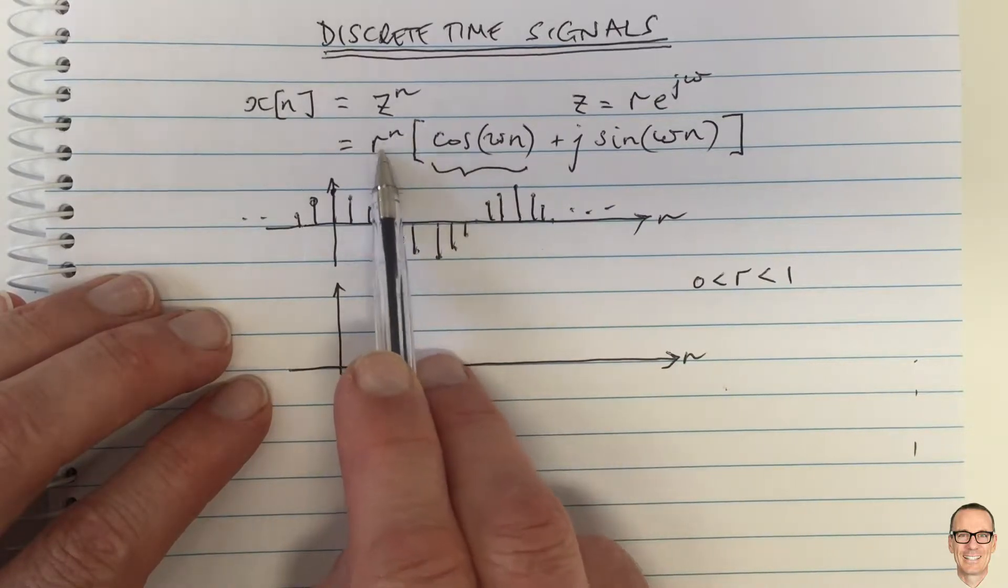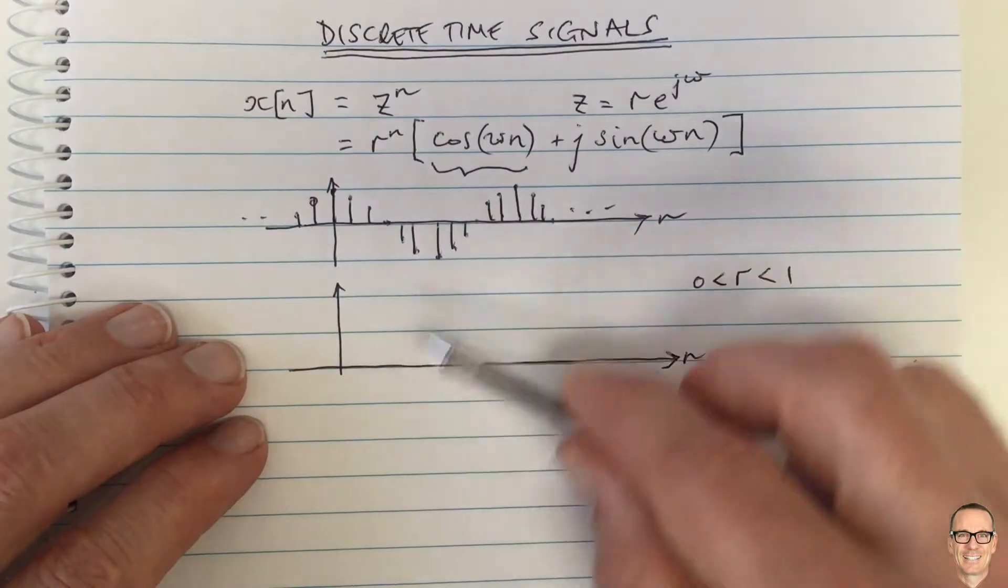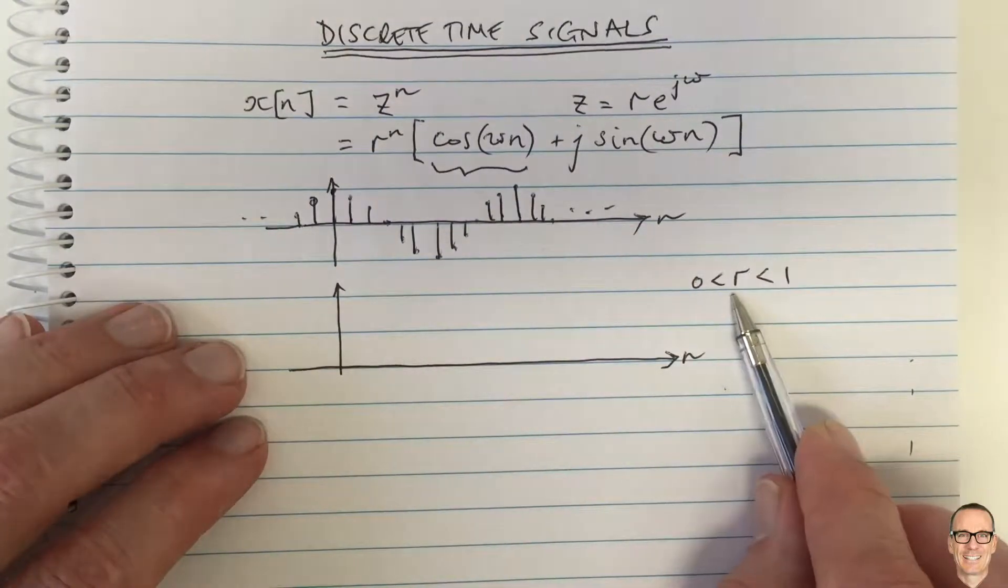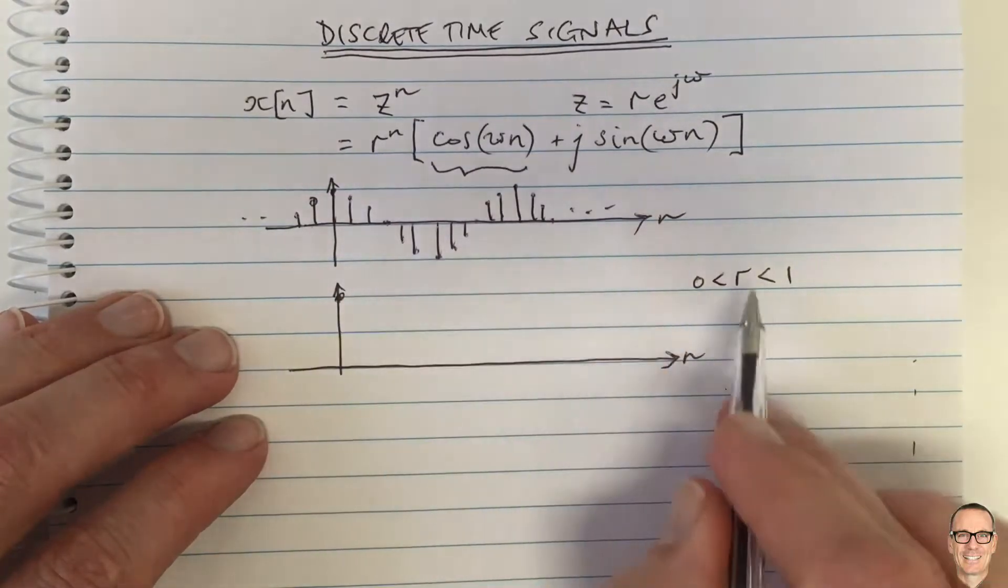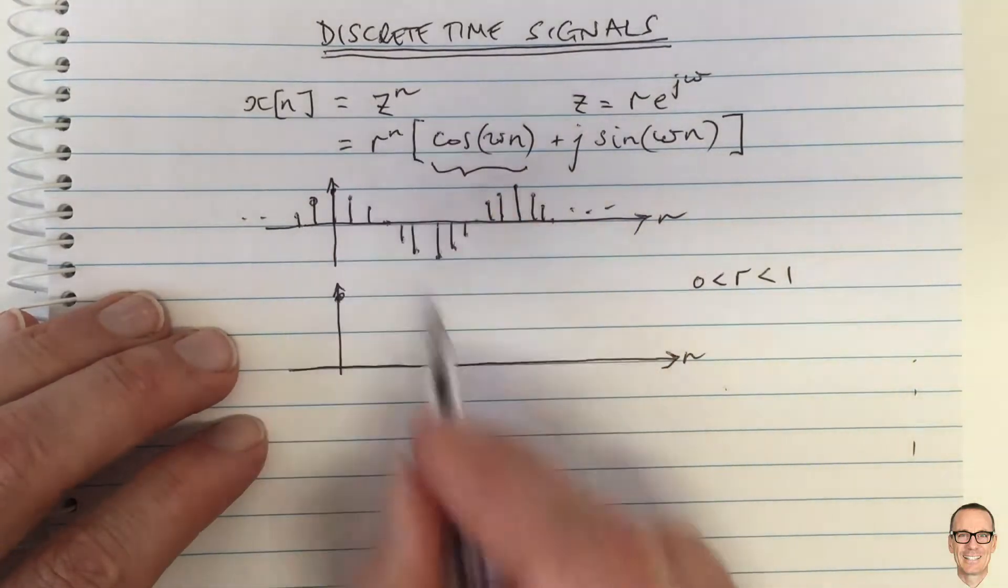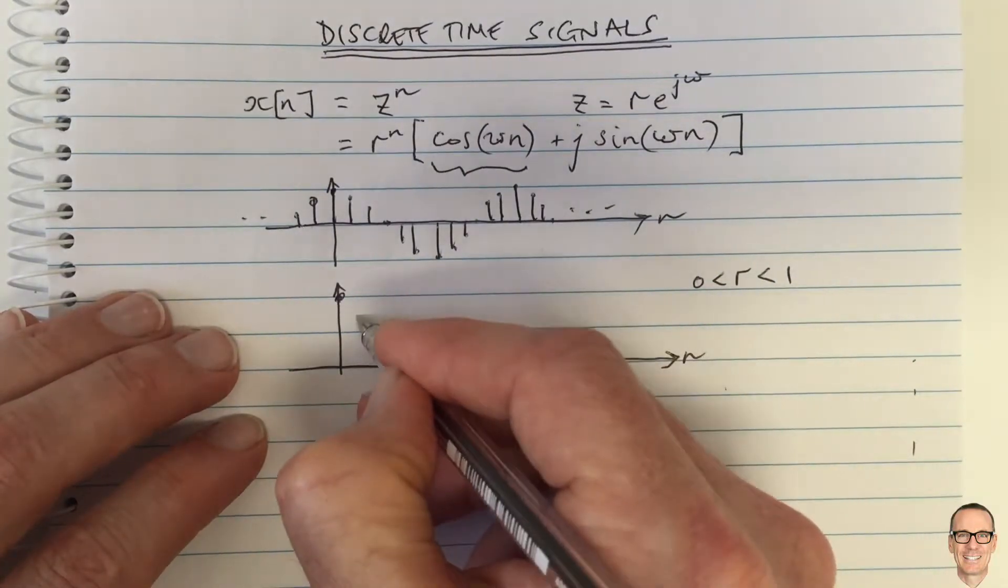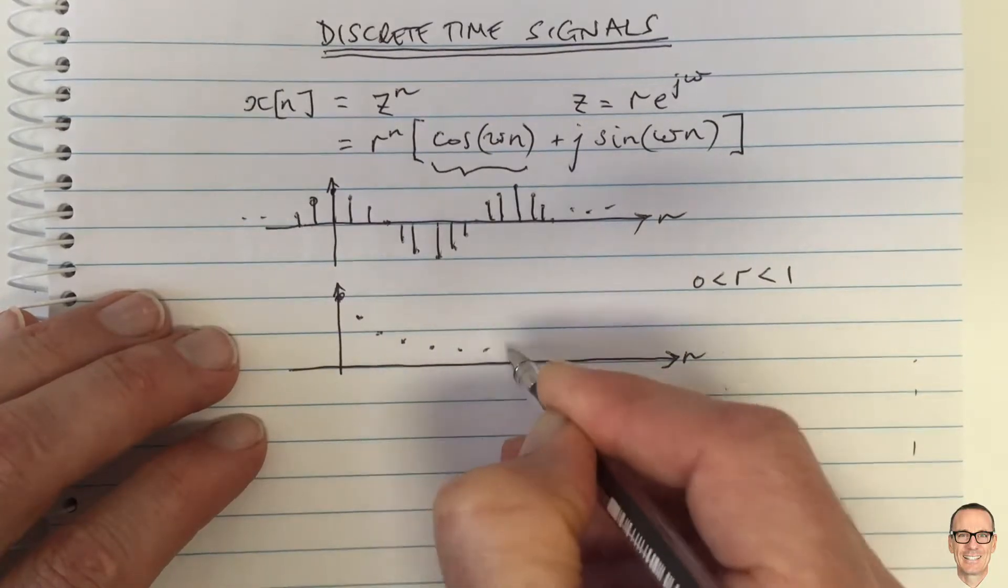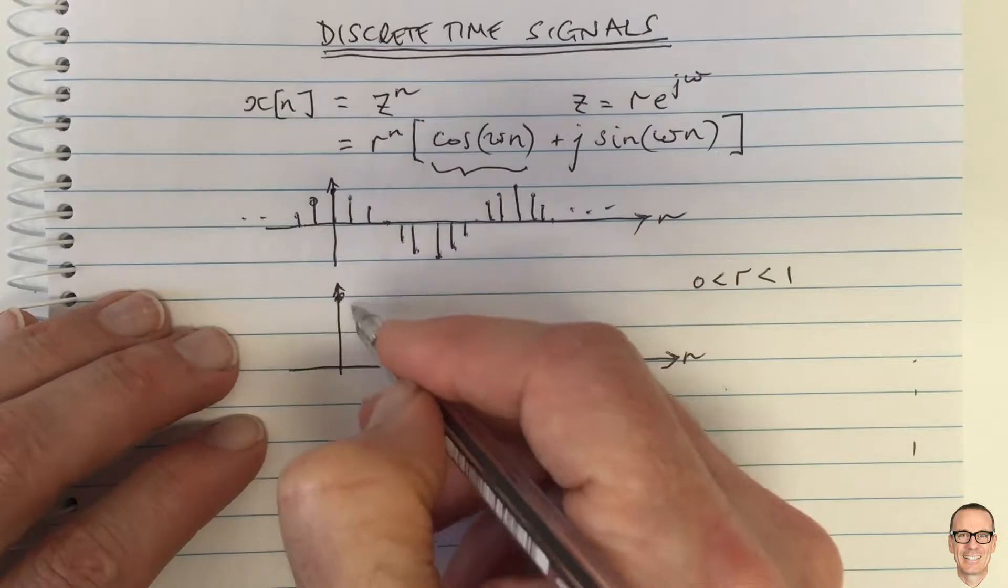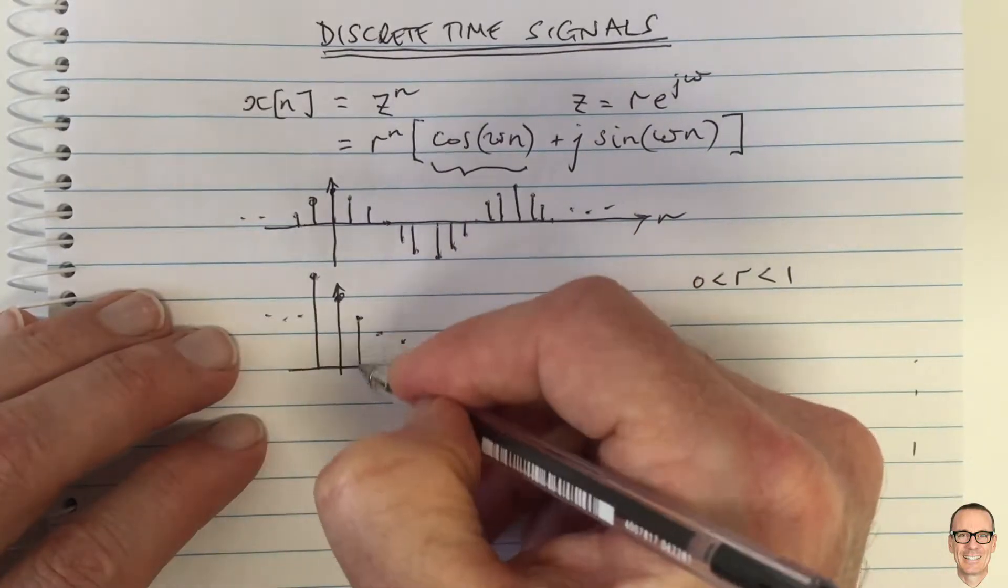n is even, you have a positive value if r is negative, but when n is odd, you have negative. So the function will go positive and negative if r is negative. But for these values of r, it's what we're more familiar with. As n increases, r^n is a decreasing exponential function if r is in this range (0 < r < 1).